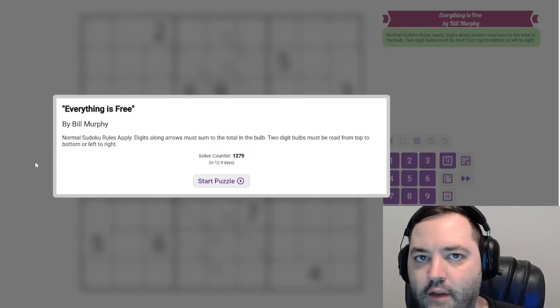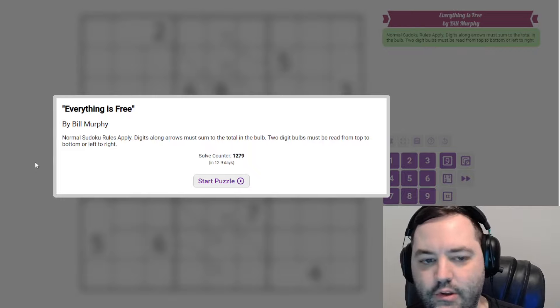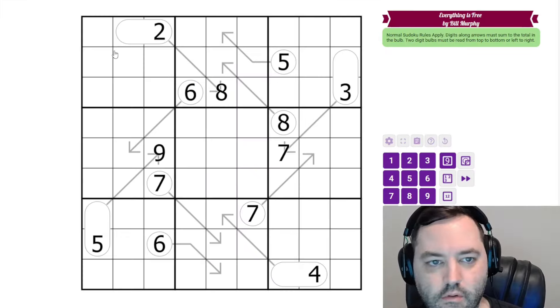Hi everyone, this is the guest walkthrough for May 11th. I'm Philip Newman. This is Everything is Free by Bill Murphy, and this is an Arrow Sudoku.